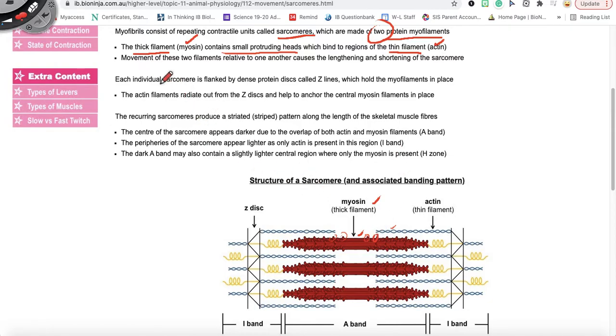So what happens? These two filaments are going to move past each other or relative to each other, and this is what's going to cause the lengthening and the shortening of the sarcomere as it contracts and as it expands.